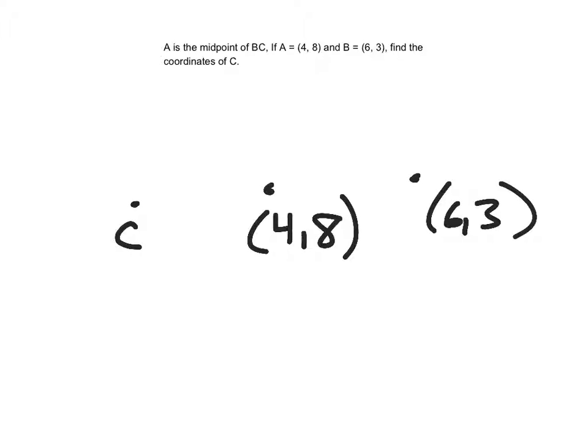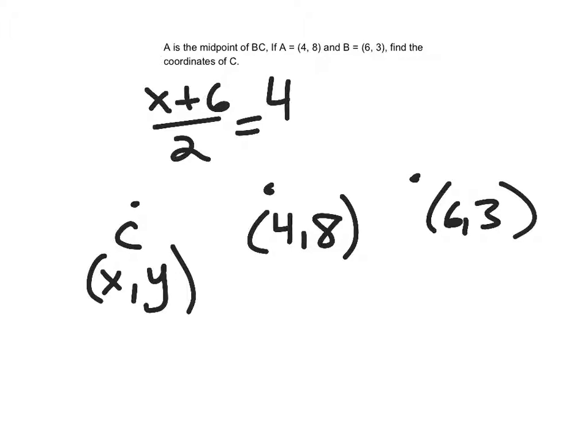So we just have to go backwards. So C's coordinates are going to be x, y. So I would have x plus 6 over 2 would have to equal 4. So now these are my endpoints. So I have x and 6.